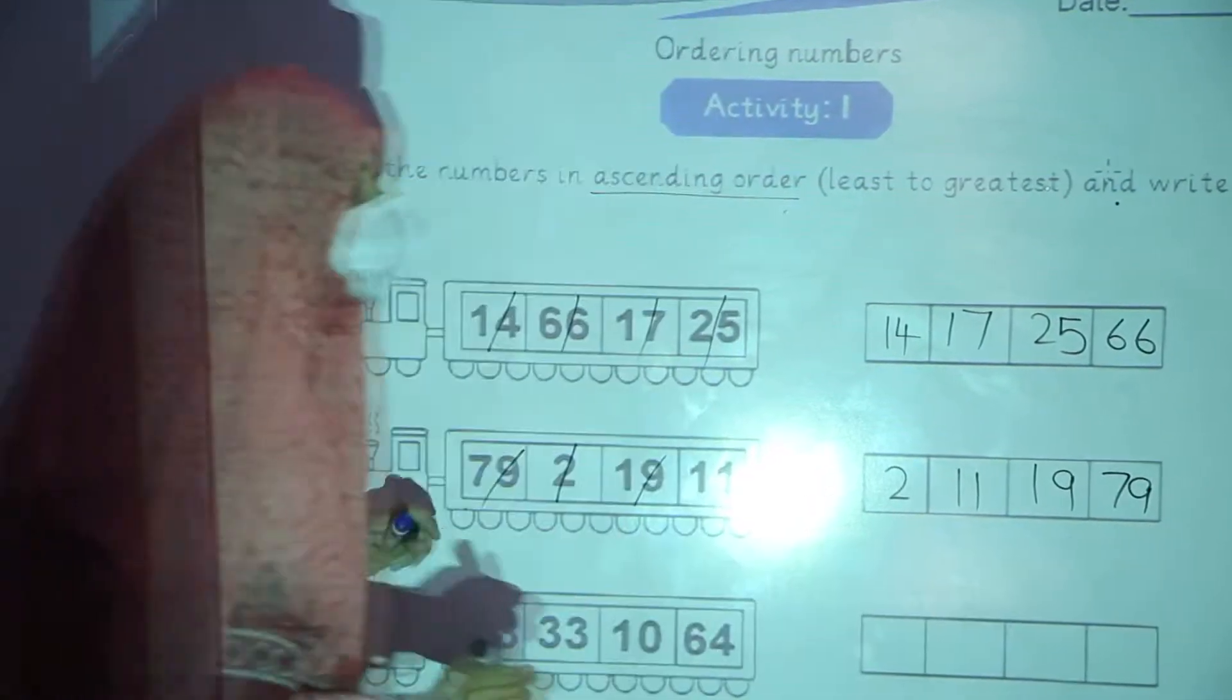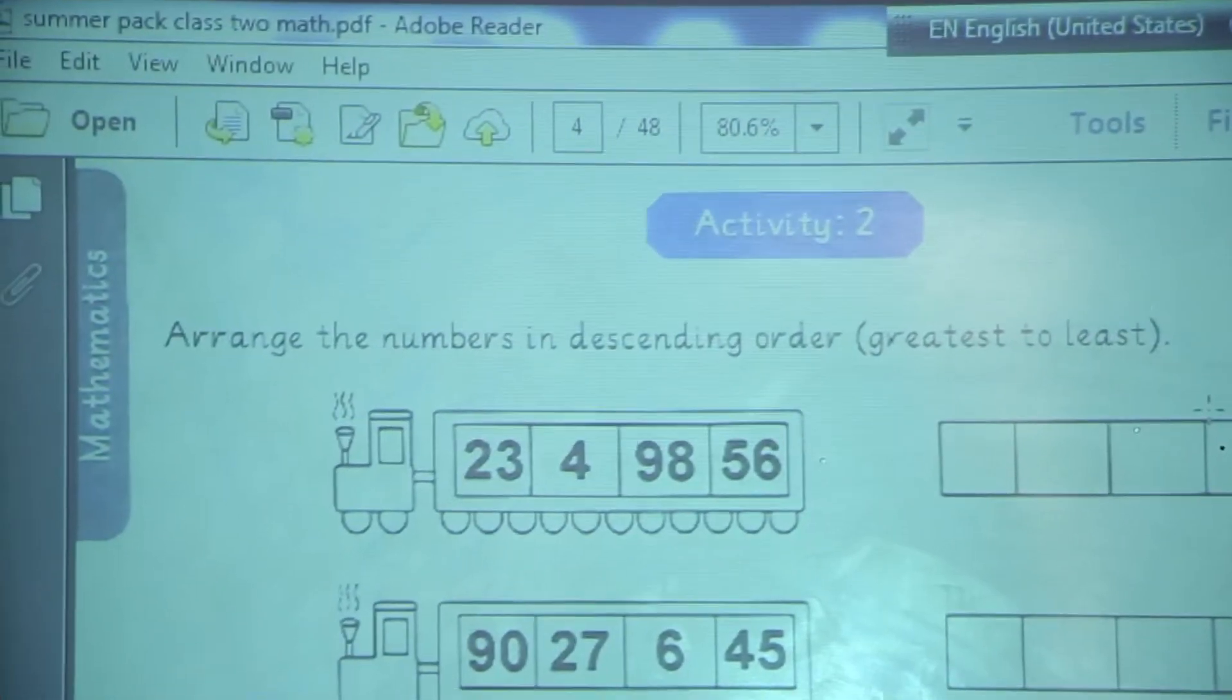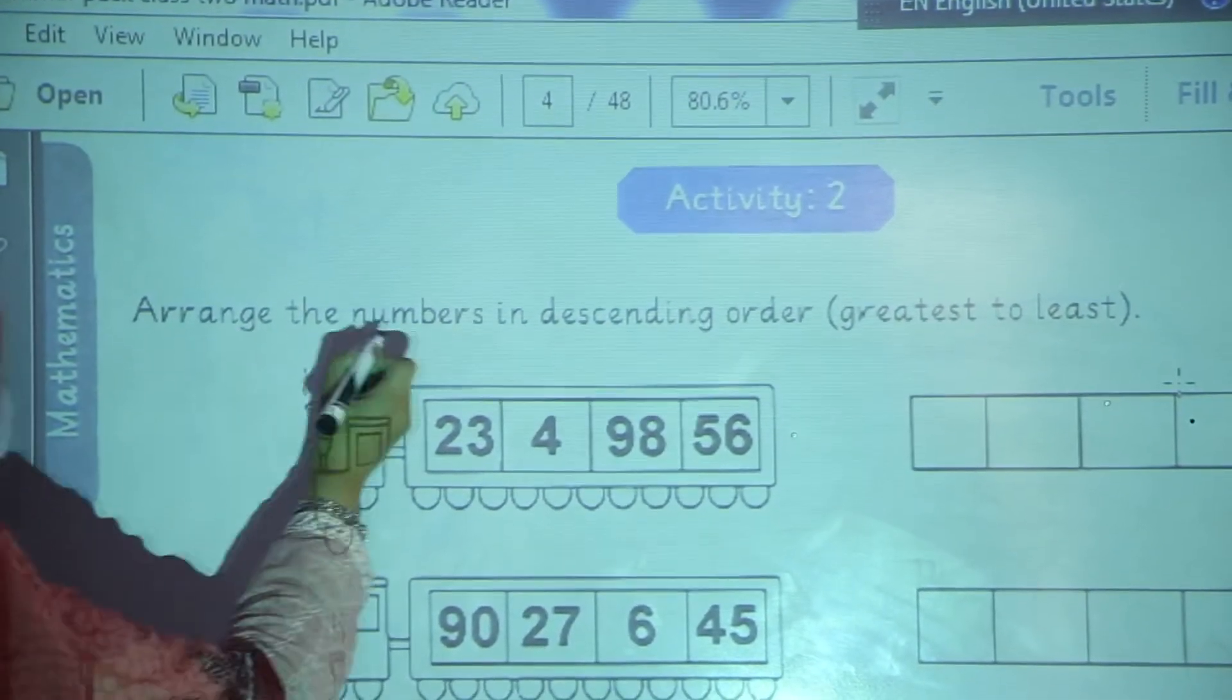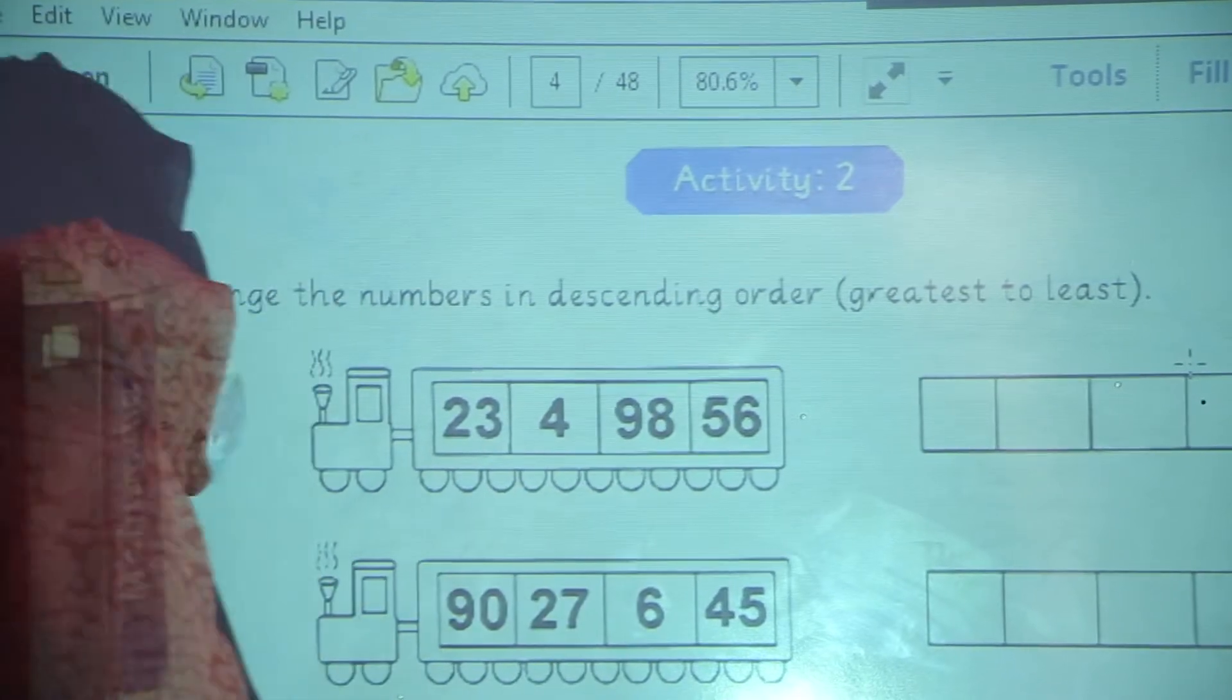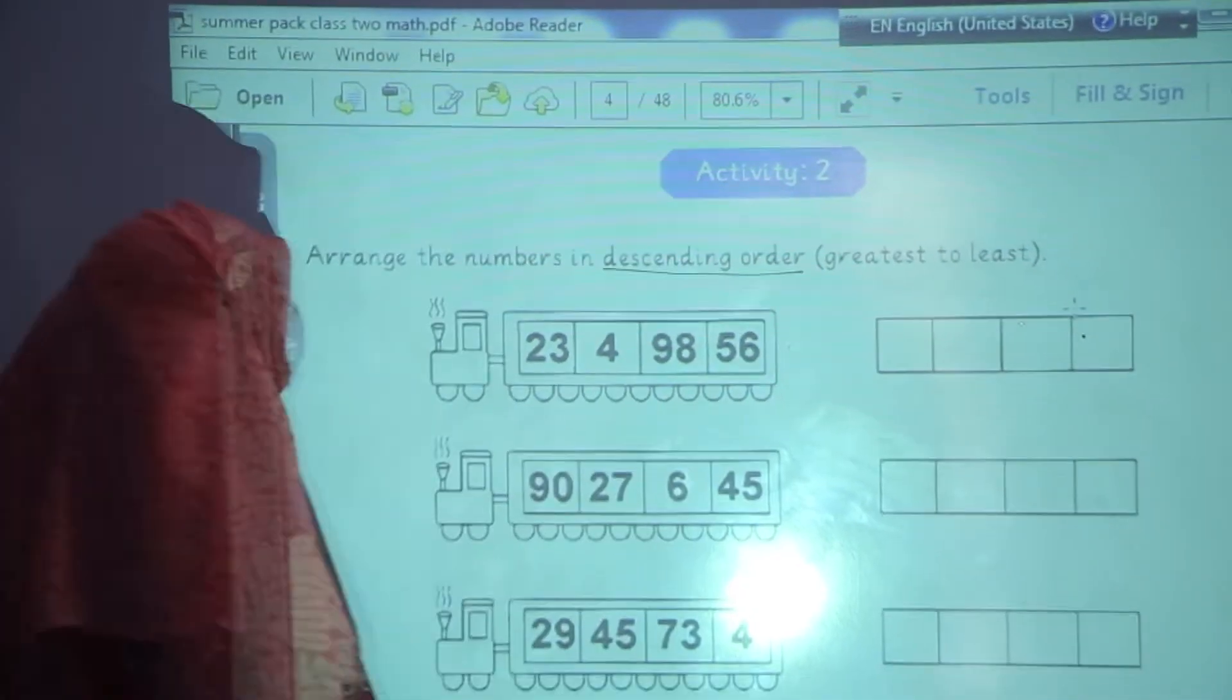In this way, you will complete this activity by your own. Now we are going to start activity number 2. Arrange the numbers in descending order from greatest to least. Descending order from larger to least.